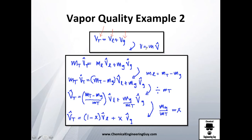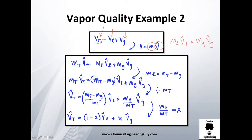By definition, any volume is the mass times the specific volume. So you have the mass of that liquid times the specific volume of that liquid, plus the mass of that gas times the specific volume of that gas. Essentially we're equating this to the total mass times the specific volume of the mixture.